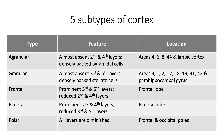The 5 subtypes of cortex are: first, the agranular type, where densely packed pyramidal cells are found and the 2nd and 4th granular layers are almost absent — this is found in the motor cortex, that is areas 4, 6, 8, 44, as well as in the limbic cortex. The second subtype is the granular cortex, which shows densely packed stellate cells, with the 3rd and 5th pyramidal layers almost absent — found in sensory areas: somatosensory area 3, 1, 2; visual cortex areas 17, 18, and 19; auditory cortex areas 41 and 42; and the parahippocampal gyrus.